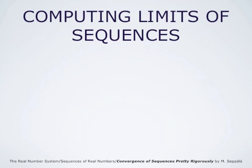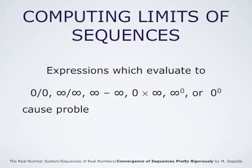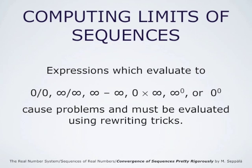Expressions which evaluate to 0 divided by 0, infinity divided by infinity, infinity minus infinity, 0 times infinity, infinity to the power 0, 0 to the power 0, or 0 to the power infinity are all undefined — one cannot assign a value to those. These kinds of indeterminate forms cause problems and they have to be evaluated using rewriting tricks.